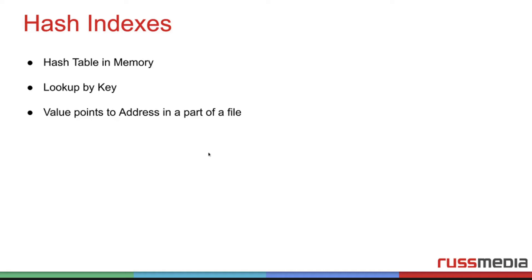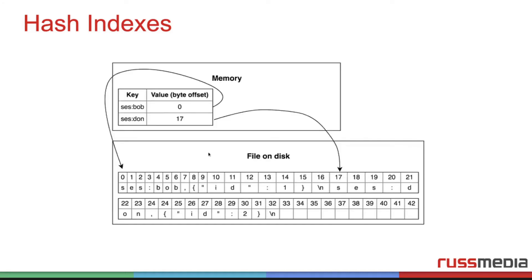It basically uses a hash table or hash map in memory, which has as a key an index or something, and as a value points to an address in a part of a file. If we look at the next slide, you can see it here a little bit better. In memory, there is a key — Bob, for example — it has the offset of zero. So on our file on disk, we look at offset zero and see the key Bob with some value like ID one.